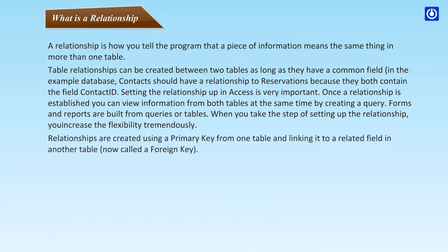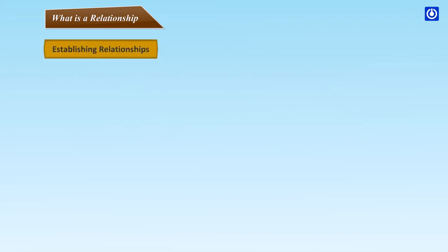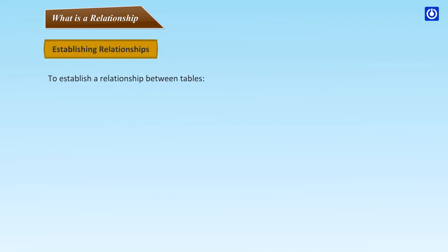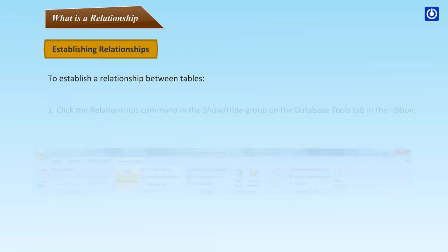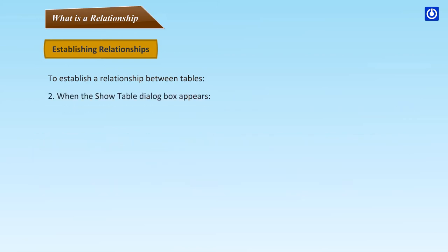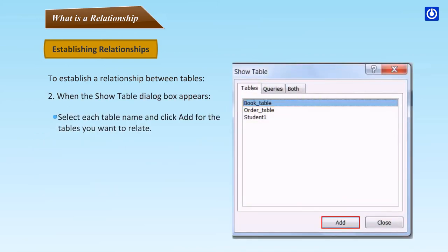Relationships are created using a primary key from one table and linking it to the related field in another table, now called a foreign key. To establish a relationship between tables, click the Relationships command in the Show/Hide group on the Database Tools tab in the ribbon. When the Show Table dialog box appears, select each table name and click Add for the tables you want to relate. When you are done, close the Show Table dialog box.